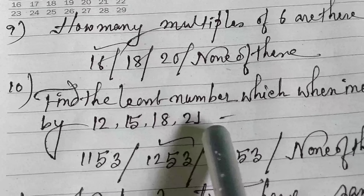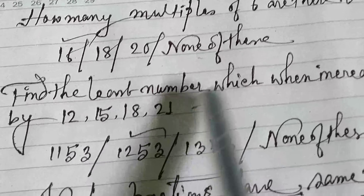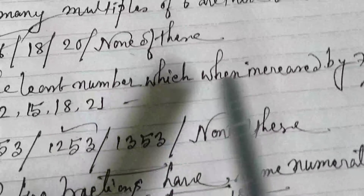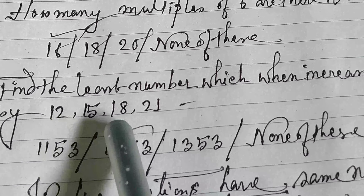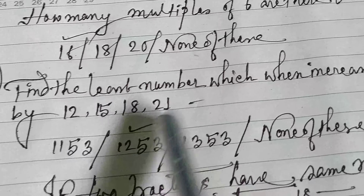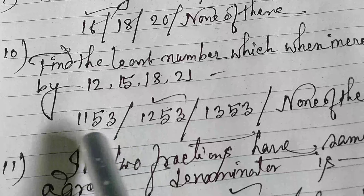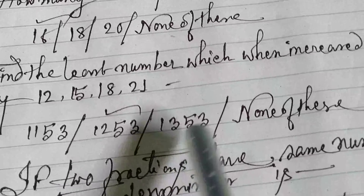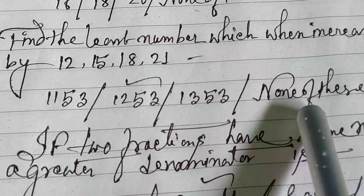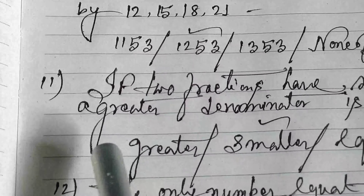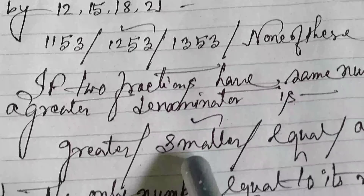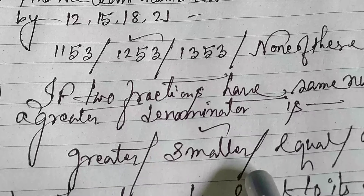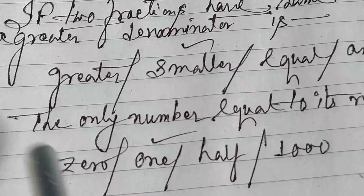Find the least number which, when increased by 7, is divisible by 12, 15, 18, and 21. Matlab least common multiple dhundna hai — agar har LCM ko 7 increase karenge, tab ja ke 12, 15, 18, 21 se divide ho sakta hai. Options are 1153, 1253, 1353, none of these. The answer is 1253.